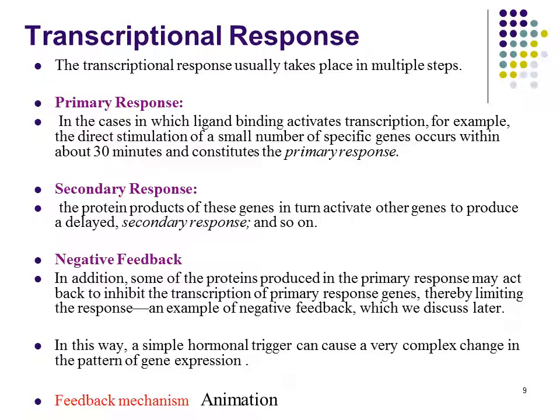The transcription response usually takes place in multiple steps: primary response, secondary response, and negative feedback. In the primary response, when ligand binding activates transcription, the direct stimulation of a small number of specific genes occurs within about 30 minutes. In the secondary response, the protein products of these genes in turn activate other genes to produce a delayed secondary response. In negative feedback, some of the proteins produced in the primary response may act back to inhibit the transcription of primary response genes, thereby limiting the response — an example of negative feedback which we will discuss later.